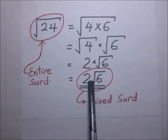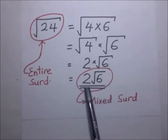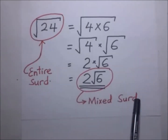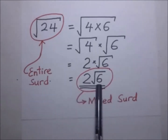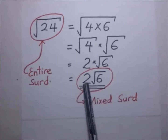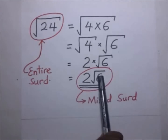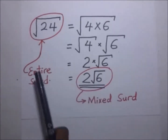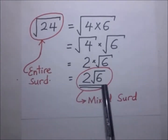Our final answer is 2 times the square root of 6. This is what we call a mixed surd — a product of a rational number and an irrational number. We always convert an entire surd into a mixed surd in the process of simplification, and this is something we shall encounter a lot in calculations.